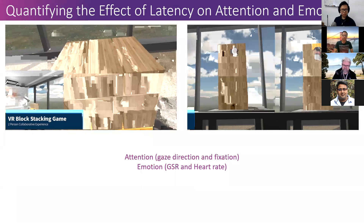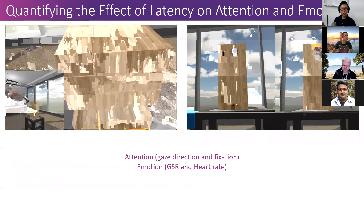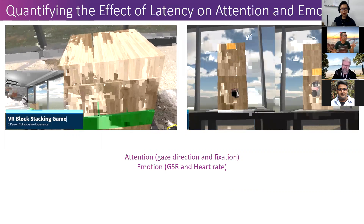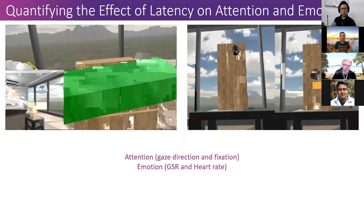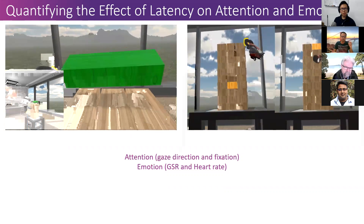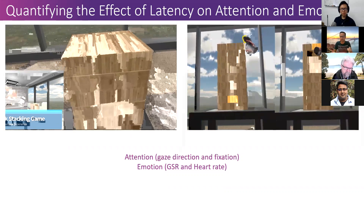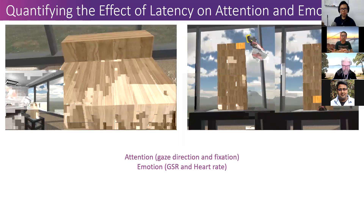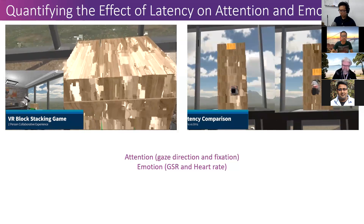Another work in progress is finding the effect of network latency on attention and emotion in VR. We have a Tetris-style game with two different latency levels — 400 milliseconds and near-zero. We're trying to find out how we cope neurologically and physiologically when performing a task with system latency, how much attention we pay, and if there's a collaborator, how we interact with them under different latency levels. I hope to share more results in the coming months.